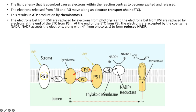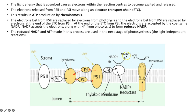As the electrons from photosystem 2 pass along the electron transport chain they are picked up by photosystem 1. In comparison, the electrons lost from photosystem 1 and moving along the electron transport chain are picked up by the coenzyme NADP, which reduces it to NADPH, or reduced NADP. The reduced NADP and the ATP that are made are then used in the next stages of photosynthesis — the light-independent reactions.